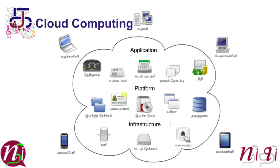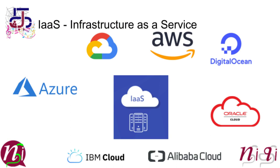Cloud computing is majorly classified into three models: IaaS, PaaS, and SaaS. IaaS means Infrastructure as a Service. This is what people generally call cloud computing or a cloud server by default. The leader in IaaS is Amazon Web Services, or AWS — they are the biggest market leader in providing infrastructure cloud.